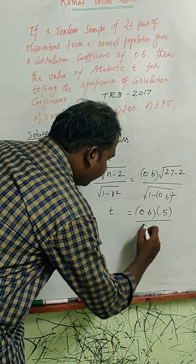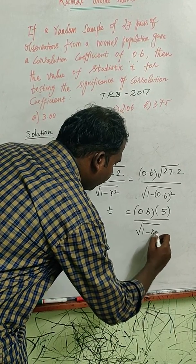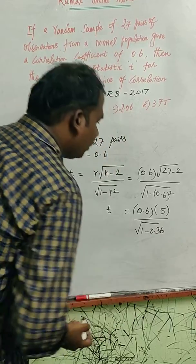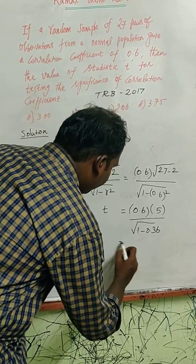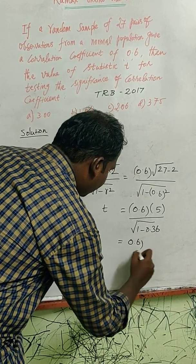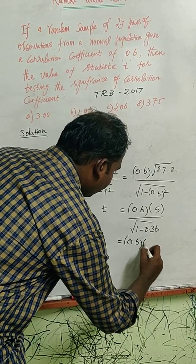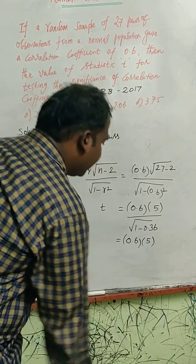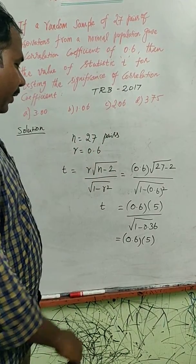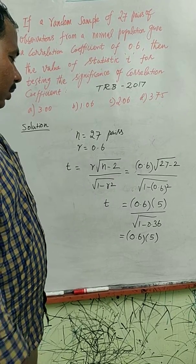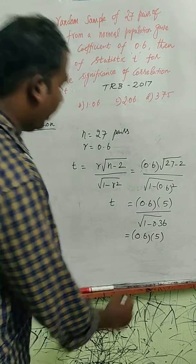0.36 is 1 minus 0.6 into 5. 1 minus 0.36, 0.64, we have to get root of 0.64, 0.8.